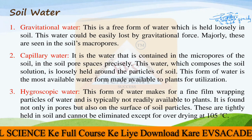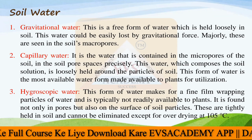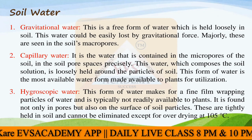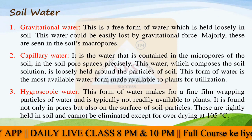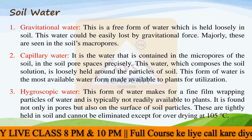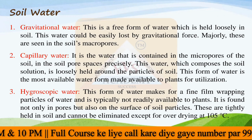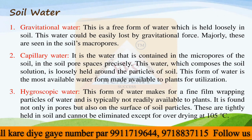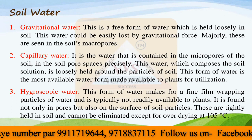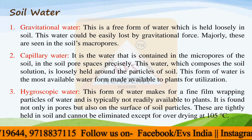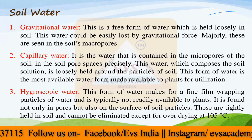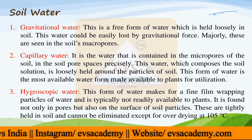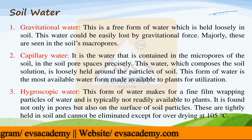The second type of soil water is capillary water. It is the water contained in the micropores of the soil — not in the macropores, but in the small micropores and soil pore spaces precisely. This water, which composes the soil solution, is loosely held around the soil particles and is mostly the available water for plants to utilize.